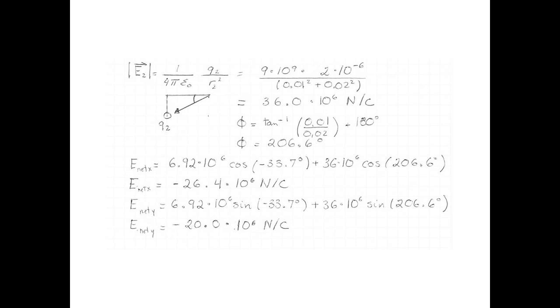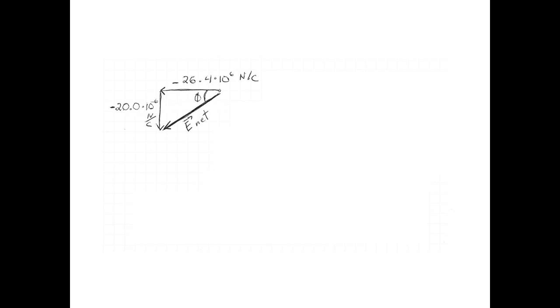All right, let's get the magnitude and the direction of the net field. Always, always, always draw a picture of your new vector to make sure you don't screw up. So here's my x-component, my y-component, and my net field. I'll start with the magnitude. Pythagorean theorems are easy. Square root of 26.4 times 10 to the power of 6 squared plus 20 times 10 to the power of 6 squared. And then the magnitude of my net electric field is 33.1 times 10 to the power of 6 newtons per coulomb.